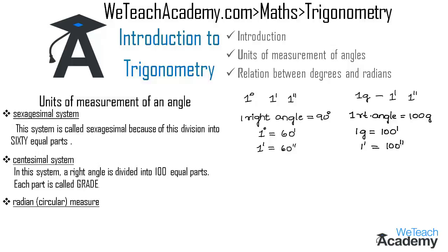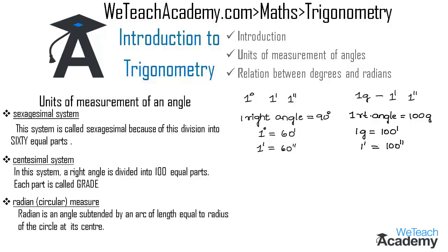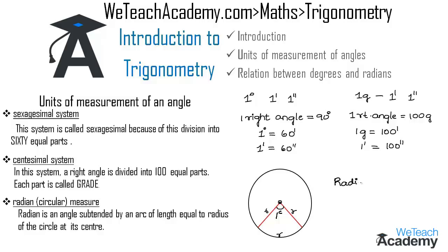The third system is radian or circular measure. A radian is defined as the angle subtended by an arc of length equal to the radius of a circle at its center. Consider a circle with center O and radius R, and take an arc whose length equals the radius. The radian is the angle subtended by that arc. It is written as 1c and is also called circular measure. Note that a radian is not dependent on the radius of the circle.